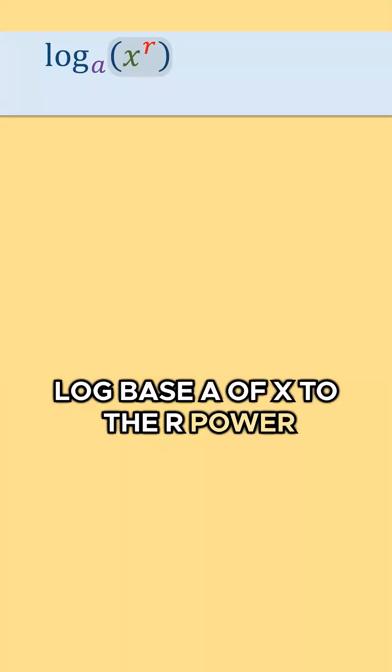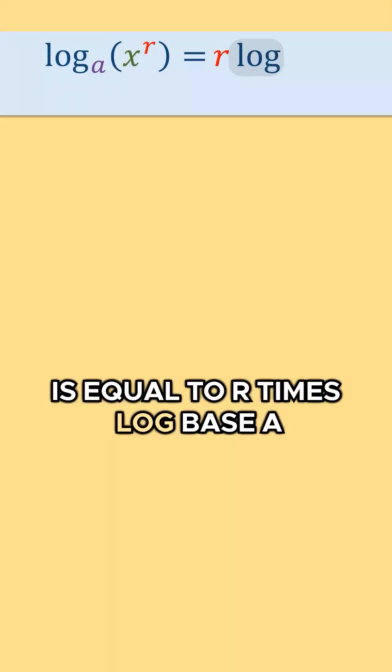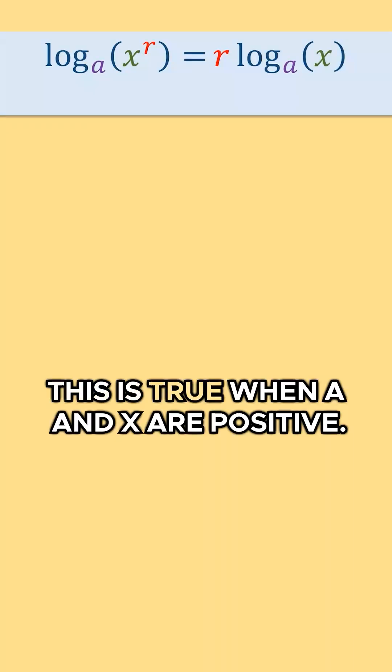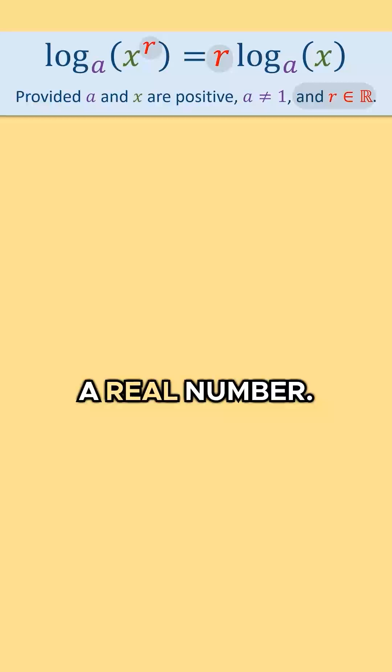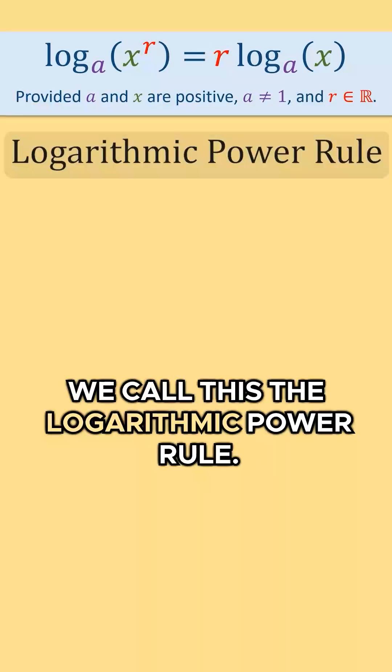Log base a of x to the r power is equal to r times log base a of x. This is true when a and x are positive, a does not equal 1, and r is a real number. We call this the logarithmic power rule.